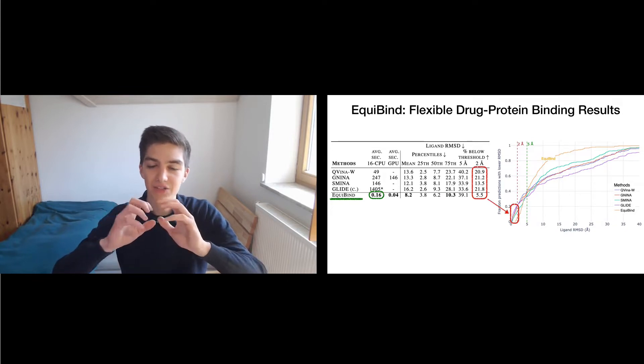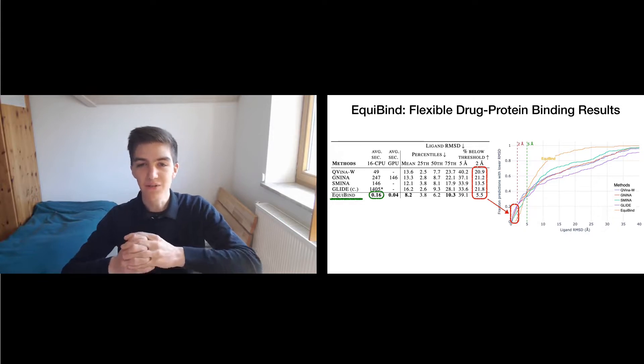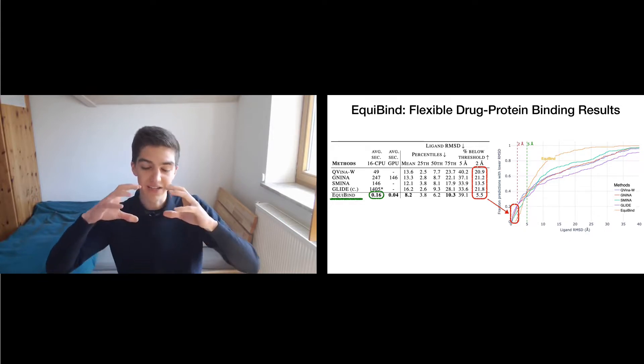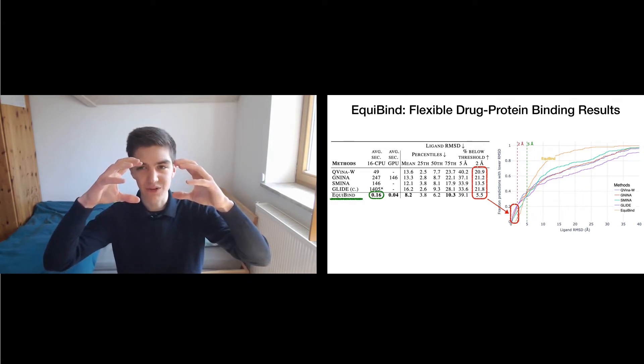But in this very low angstrom area, there, we're actually doing worse than the baselines. So, because we know that EquiBind is good at getting the approximate location right, we first use EquiBind to get a prediction.